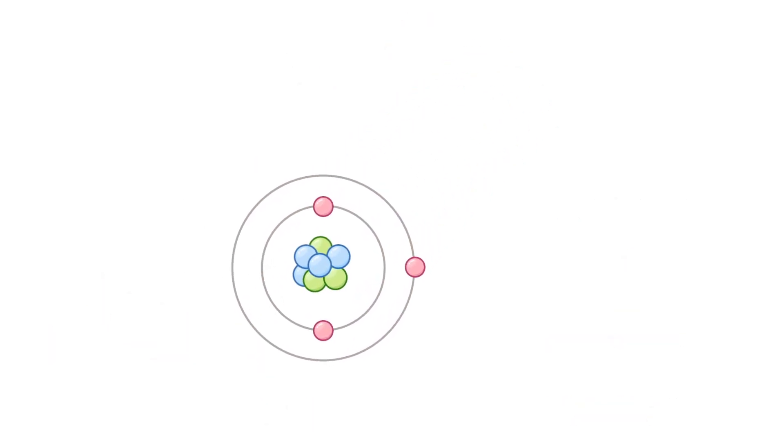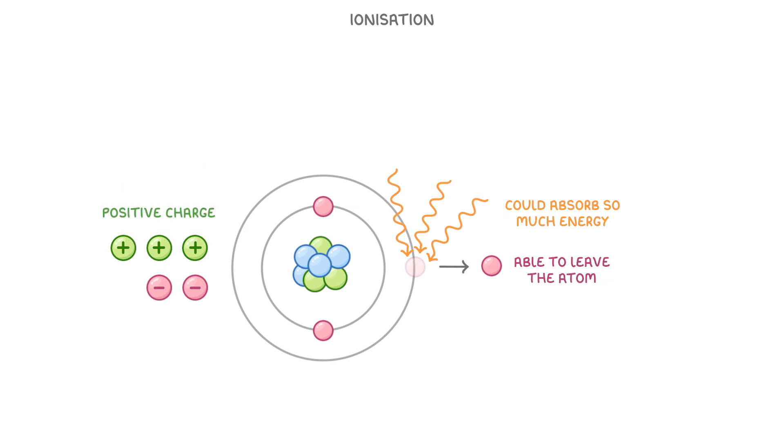The very last thing we need to look at is ionization. Very occasionally, one of the outermost electrons should absorb so much energy that it is able to completely leave the atom. This leaves the atom with more protons than electrons, and so it's left with a positive charge, which means that we now call it a positive ion, rather than an atom.